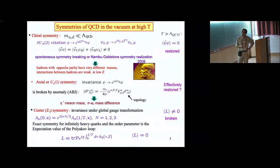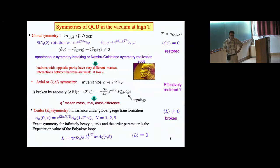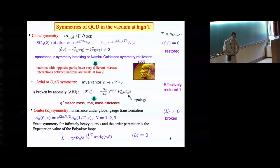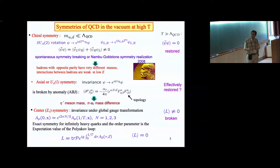At high temperatures, there is an additional symmetry called the center symmetry — the Z(3) symmetry. This comes from invariance under global gauge transformations: the partition function of QCD is invariant if you take a transformation that leaves the gauge field periodic up to a phase which is a cubic root of unity — e^(i 2pi n/3) where n can be 1 to 3 for SU(3). This is an exact symmetry if you don't have quarks — if you assume quarks are infinitely heavy. There is an order parameter for this symmetry called the Polyakov loop: if this is a symmetry, the expectation value of the Polyakov loop should be zero.